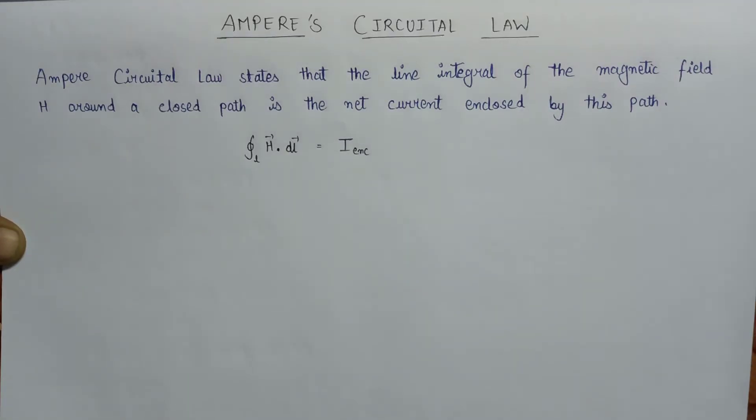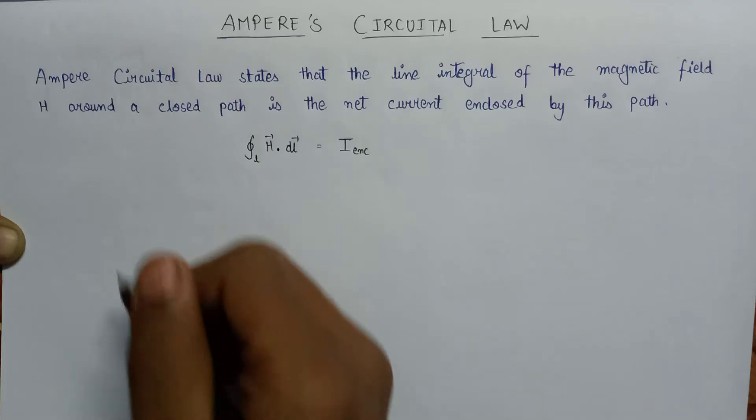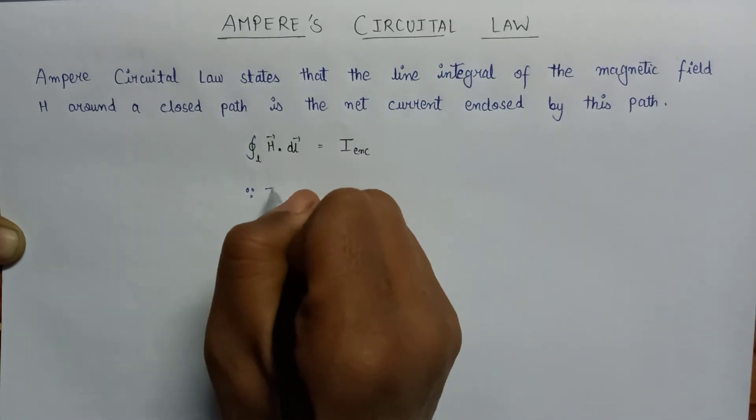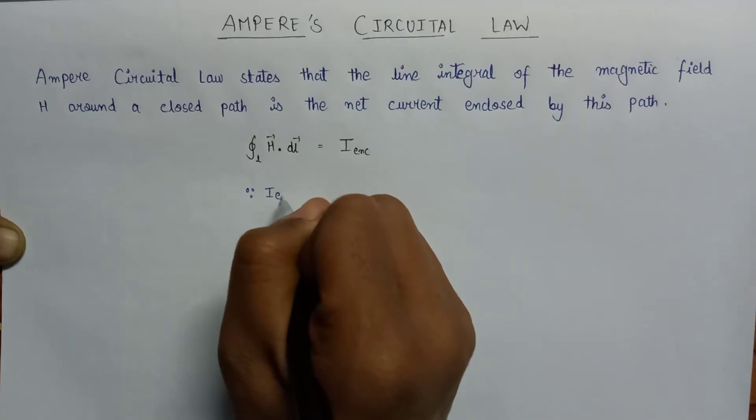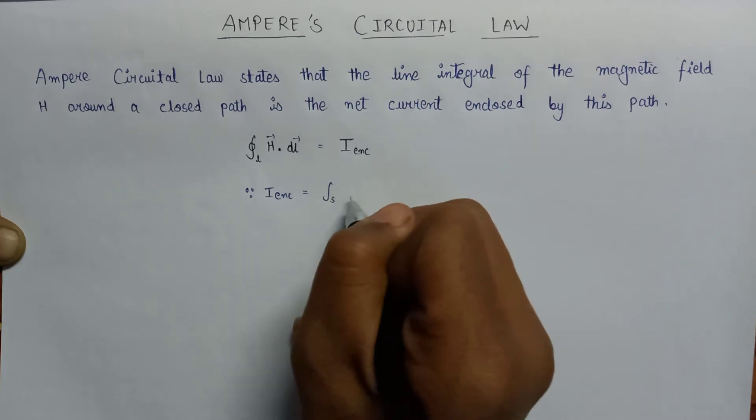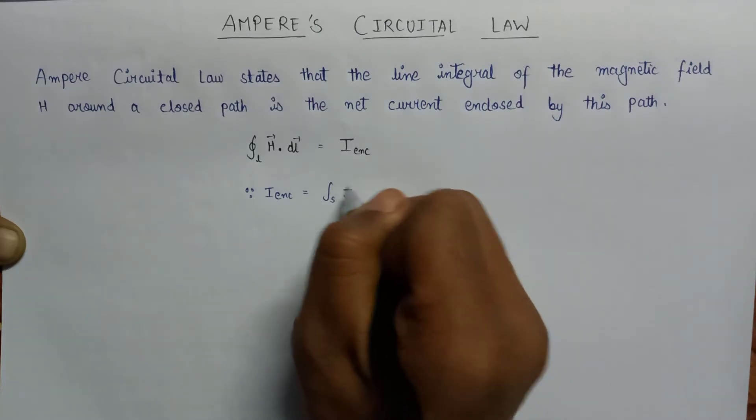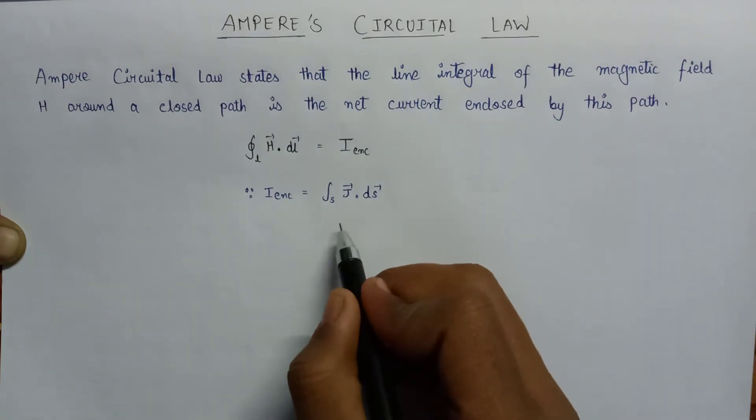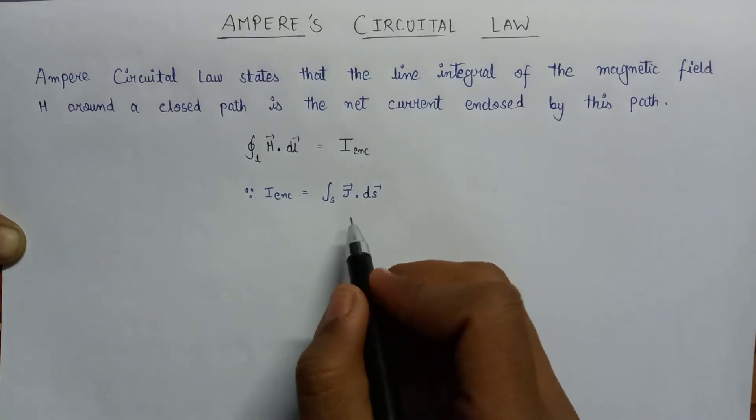We know that the total current enclosed can also be written as I enclosed equals integration over closed surface J vector dot dS vector, where J vector is the current density.